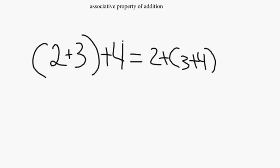So in parentheses 2 plus 3, plus 4, we do 2 plus 3 first and get 5, and then add 4 which gives us 9.